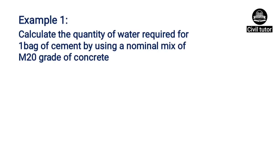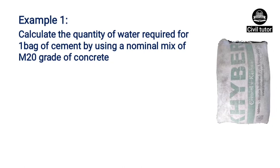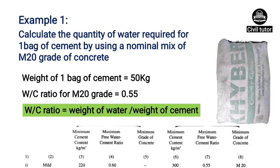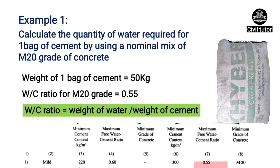Suppose we need to calculate the quantity of water required for one bag of cement by using a nominal mix of M20 grade of concrete. As we know, the weight of one bag of cement is equal to 50 kg. The water cement ratio for M20 grade of concrete as per table 5 is 0.55.